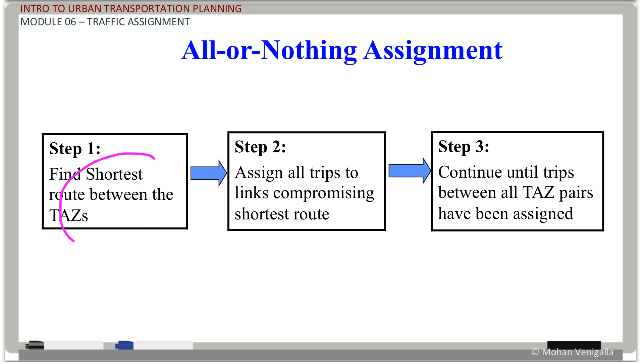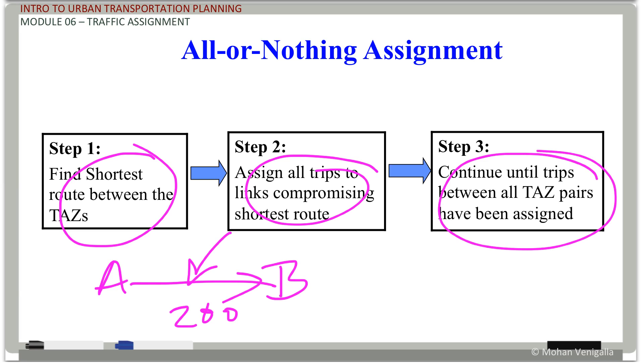So what you do is find the shortest path between the TAZs. If you have zone A and zone B, find that path, assign all the trips to that path. Between A and B if you have 200 trips, all 200 go there. Continue until all pairs of TAZ have been assigned.